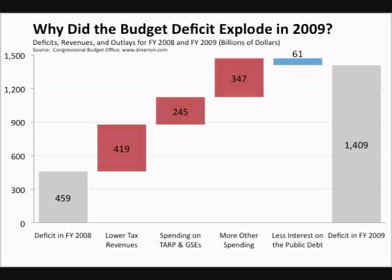When the government experiences a budget deficit, it must borrow the money it does not get from revenue. It does this by issuing government bonds. When someone buys a government bond, they are loaning the government money. There will be more on bonds, notes, and T-bills in a future video. But when the government borrows money to make up for budget deficits, it adds to the national debt.